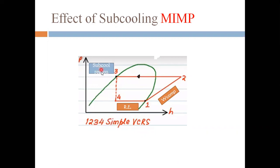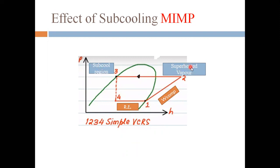In this pH diagram, the region on the left side of the saturated liquid line is known as the sub-cooled region. The region on the right side of the saturated vapor line is known as the superheated vapor region. The region in between is known as the liquid plus vapor, or wet region.